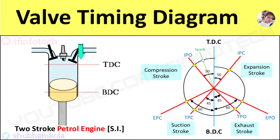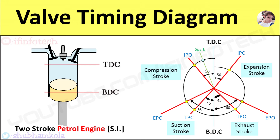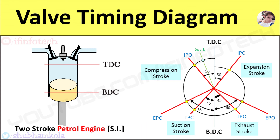This allows exhaust of combustion residual gases. The transfer port opens at an angle of 45 degrees before BDC position of the piston for the scavenging process, and closes at an angle of 45 degrees after BDC position of the piston. The exhaust valve closes at an angle of 60 degrees after BDC position of the piston.